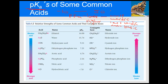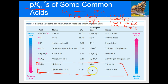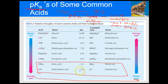Strong acids like hydrochloric acid, nitric acid, and sulfuric acid have negative pKa values — very strong. The lower the number, the stronger the acid and the weaker the base. Phosphoric acid and acetic acid are considered weak acids with small positive pKa values. Phosphoric acid is found in soda like Coca-Cola; acetic acid is vinegar. They're acidic but not dangerously so.